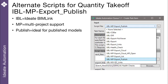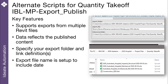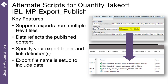For those who want to use BIM 360 published models as the basis for a takeoff, we recommend the IBL MP Export Publish script as a good starting point. This script has many advantages, including the ability to export data from multiple files and more options to control your export results. In the example shown at right, the export folder is referencing a BIM 360 desktop location and the results for each model are suffixed with the date of the takeoff.